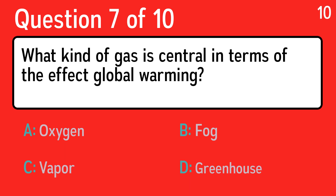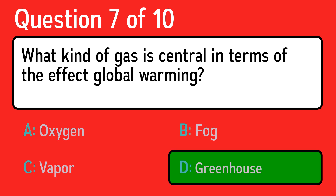Question 7, what kind of gas is central in terms of the effect on global warming? The correct answer is D, greenhouse.